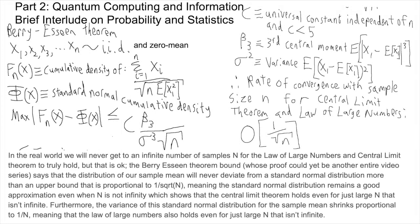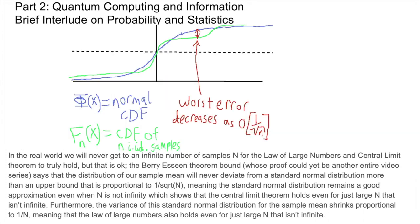The Berry-Esseen theorem bound, whose proof could yet be another entire video series on its own, says that the distribution of our sample mean will never deviate from a standard normal distribution more than an upper bound that is proportional to 1 over square root n, meaning the standard normal distribution remains a good approximation even when n is not infinity, which shows that the central limit theorem holds even for just large n that isn't infinite. Furthermore, the variance of the standard normal distribution for the sample mean shrinks proportional to 1 over n, meaning that the law of large numbers also holds even for just large n that isn't infinite.